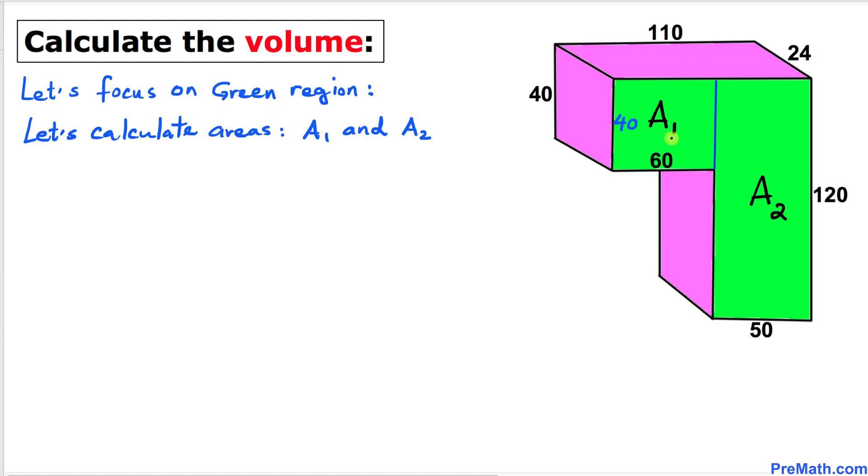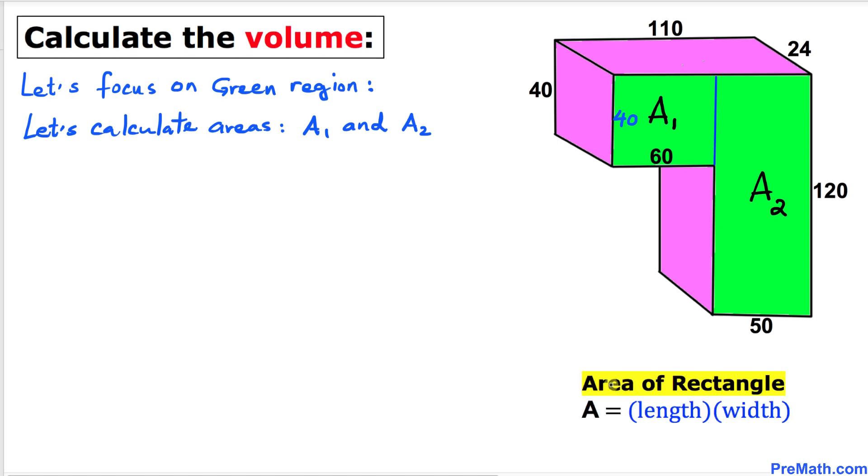Here's the area of a rectangle formula: area is always equal to length times width. Let's calculate the area A1 first for this rectangle. The side lengths are 40 and 60, and if we multiply them, our A1 area is 2400 square units.